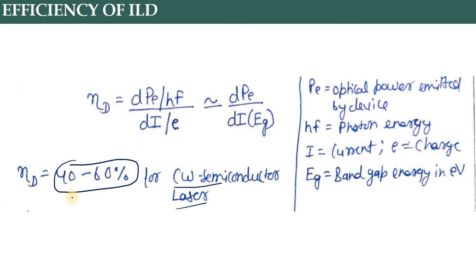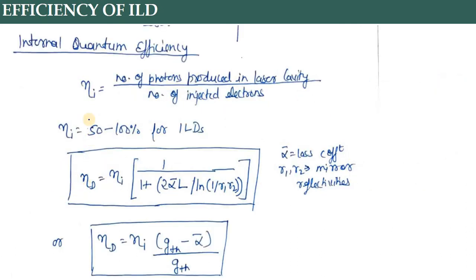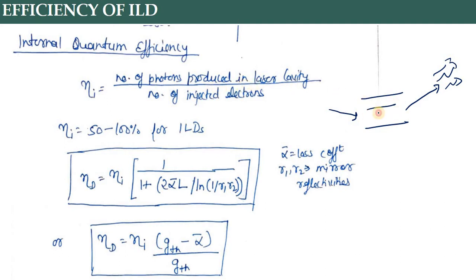Second efficiency की definition है internal quantum efficiency। यहाँ पर number of photons produced in laser cavity देखी जाती है। Overall में हमने current दिया differential form में और कितना output light मिली - बाहर। But internally, cavity के अंदर कितने photons बने और कितने inject किए थे - बीच में loss हो सकती है। इसलिए इस cavity के अंदर की efficiency को internal quantum efficiency नाम दिया है। ηi जो typically for ILDs - बहुत high होती है, 50 to 100% तक।